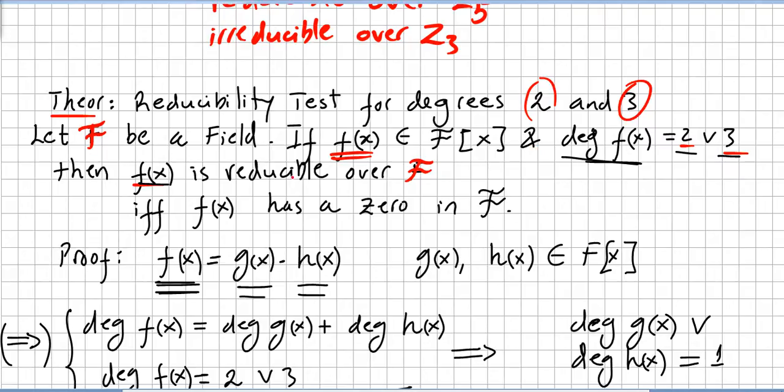...and the degree of f is 2 or 3, then f is reducible over the field if and only if f(x) has a zero in the field. If you want to see the proof, please check the previous video.